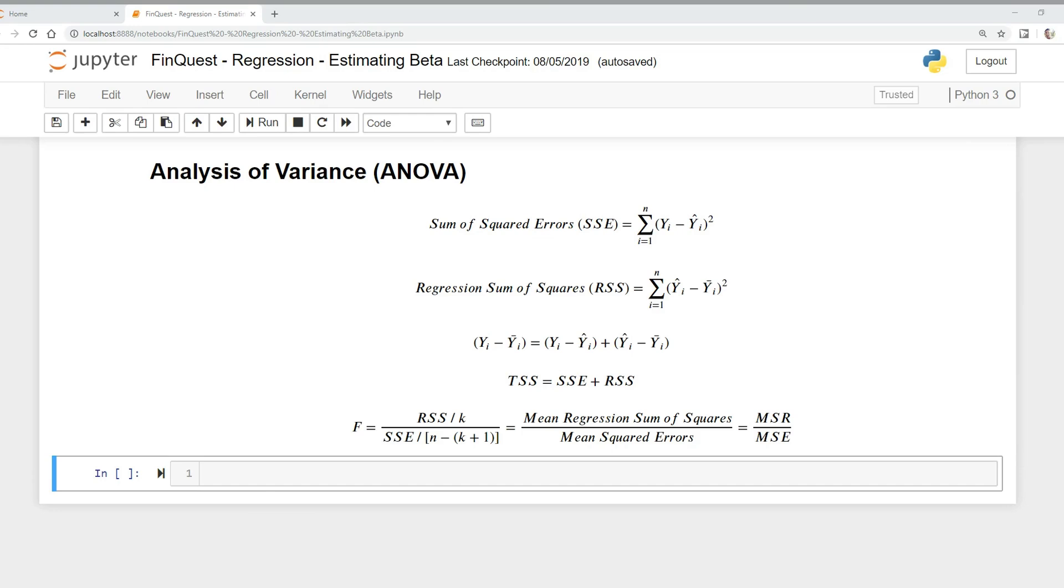Now let's dive into our F-test. Our F-test is really simple. We have a regression sum of squares, and in this numerator, we're dividing by k. What is k? That is the number of the slope coefficients. Then we divide that by the sum of squared errors divided by the degrees of freedom.